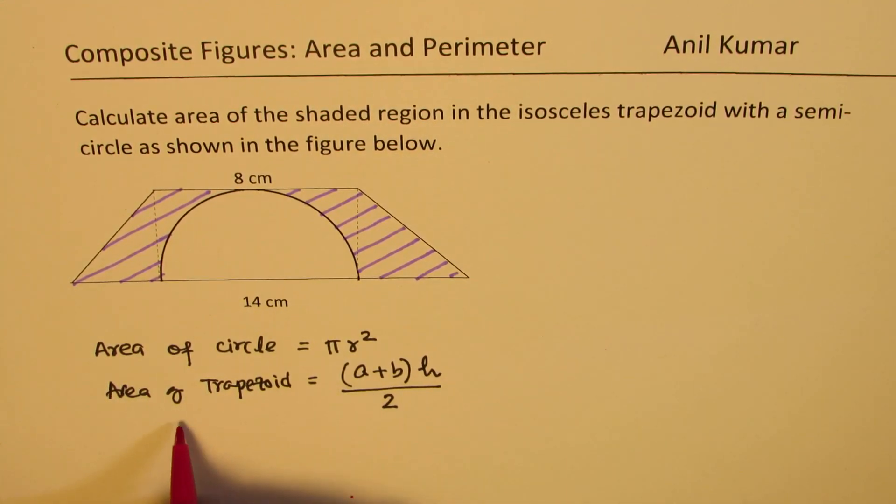where a and b are lengths of the parallel sides. So if we have a trapezoid, it may be isosceles, it may not be isosceles. So a and b are these two sides, which are parallel basically. And height is the distance between them, and that becomes the area of the trapezoid.